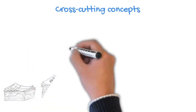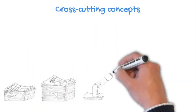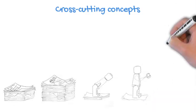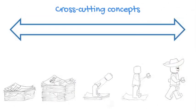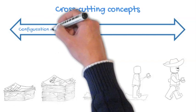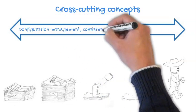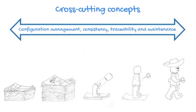There are also cross-cutting concerns that apply across all stages, such as configuration management, consistency, traceability, and maintenance. Remember, our model is a living entity — it's going to evolve over time. We have to make sure we can manage and control that evolution as well as possible.